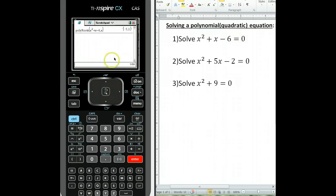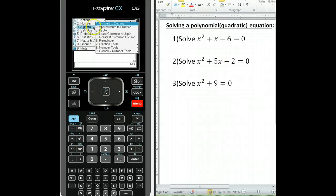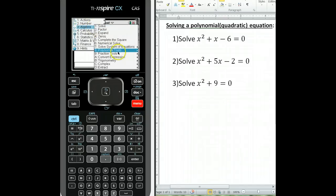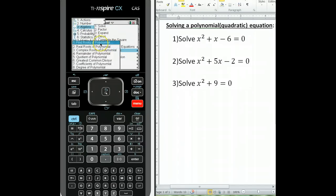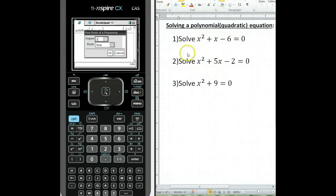Let's run through this one more time with example number 2. Menu, algebra, polynomial tools, find roots of a polynomial. The degree is still 2, and I'm still solving for real roots, so click OK.